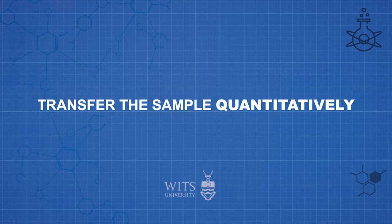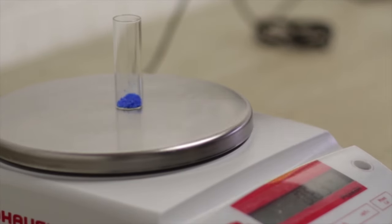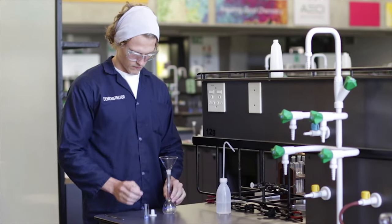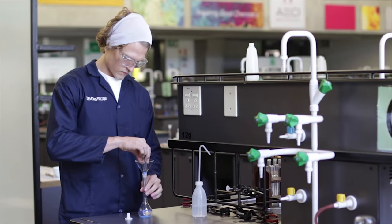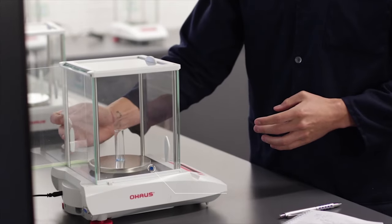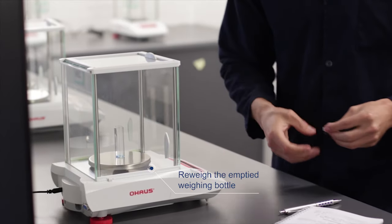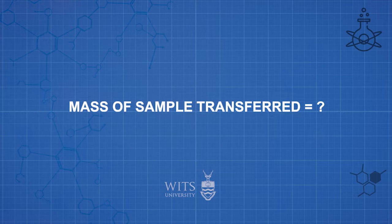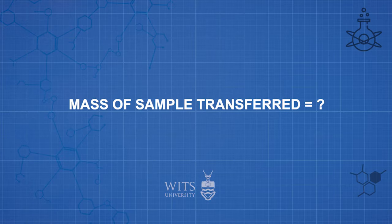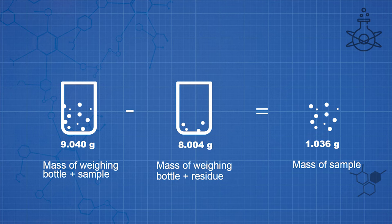If in the procedure it says 'transfer the sample quantitatively,' you do all the steps. However, once you have transferred the sample into another set of glassware, such as a volumetric flask, you would now accurately re-weigh the emptied weighing bottle to determine the exact amount of sample that was transferred, as some of the sample residue sticks to the weighing bottle. Therefore, to determine the mass of the sample that was transferred, simply subtract the mass of the empty weighing bottle weighed after the sample was transferred — which contains some sample residue — from the mass of the weighing bottle with its contents.